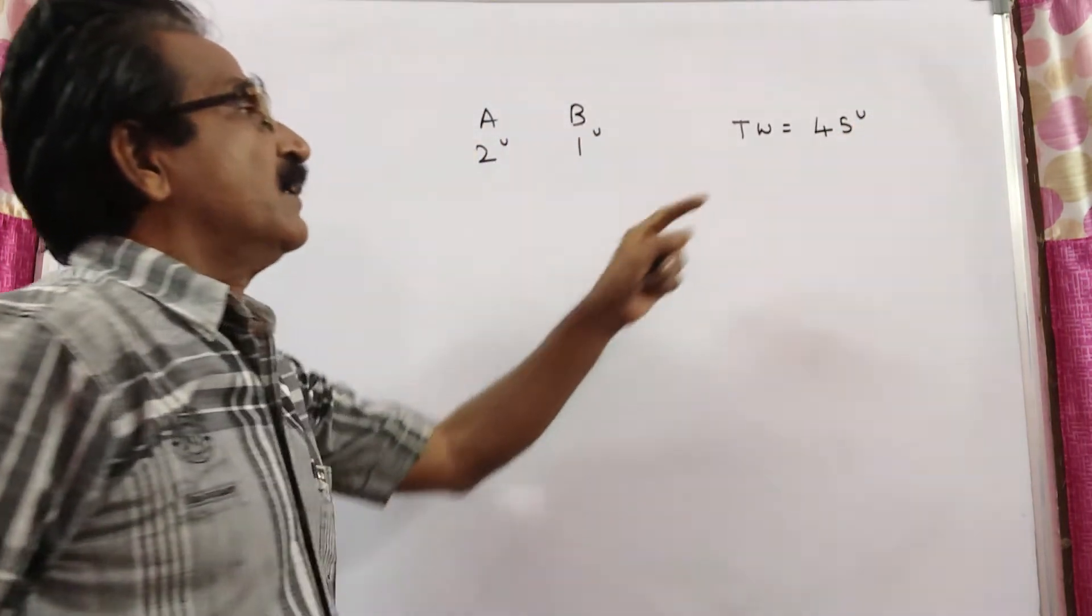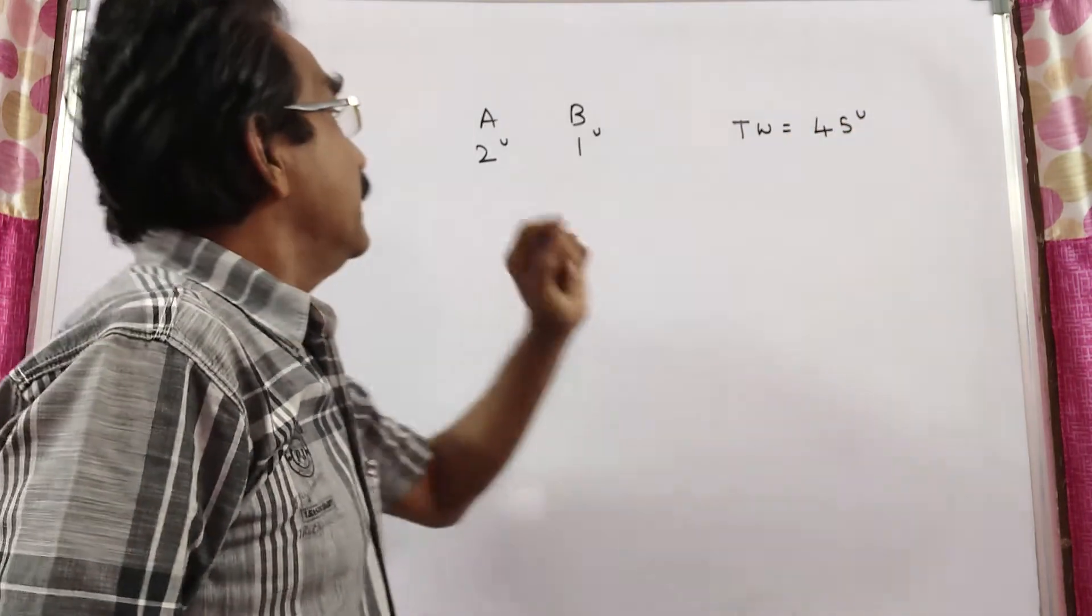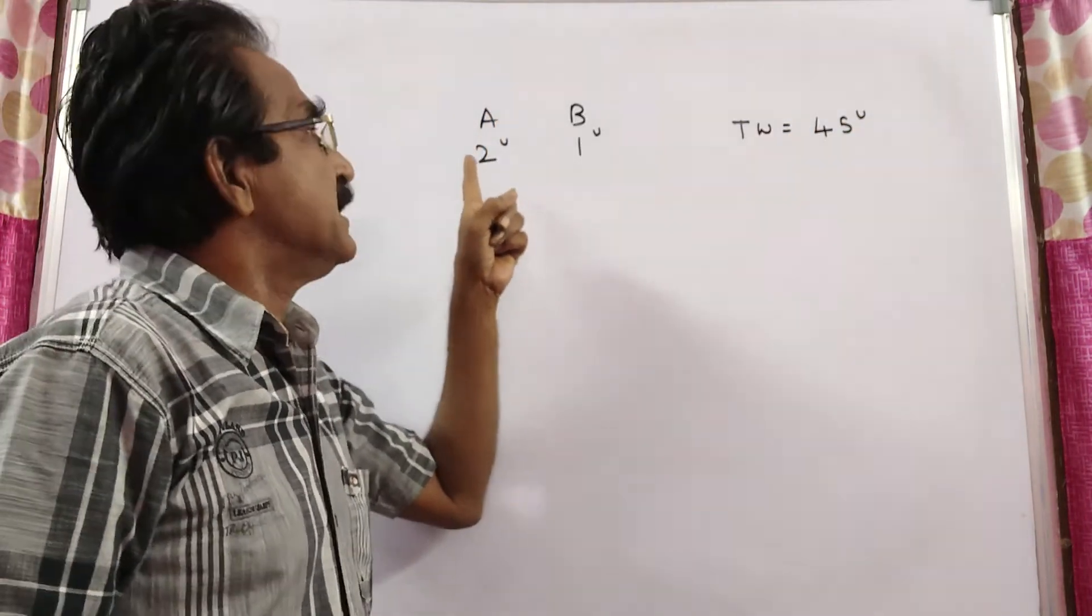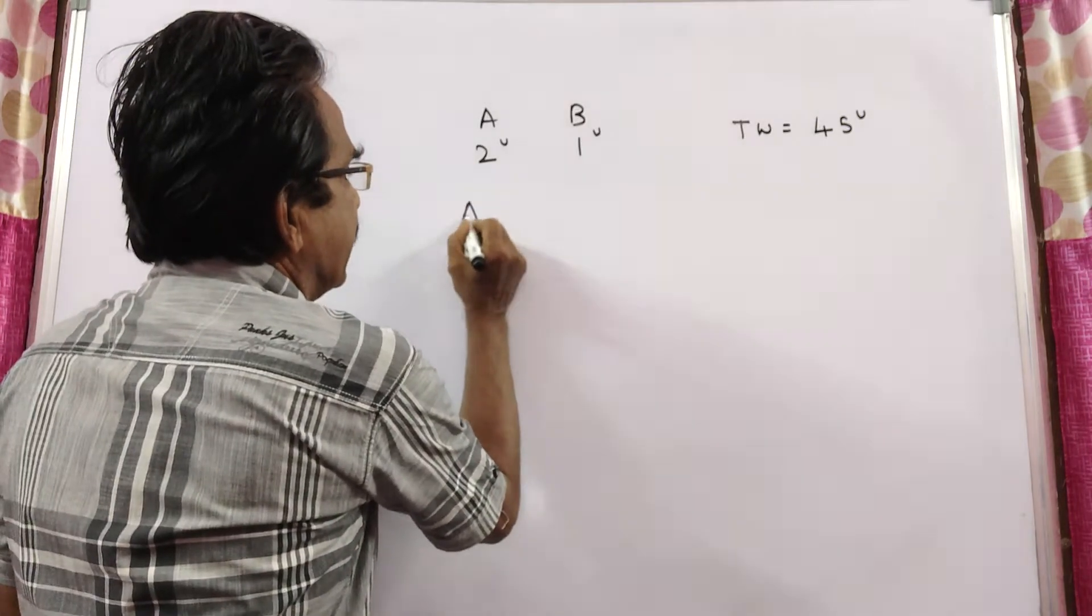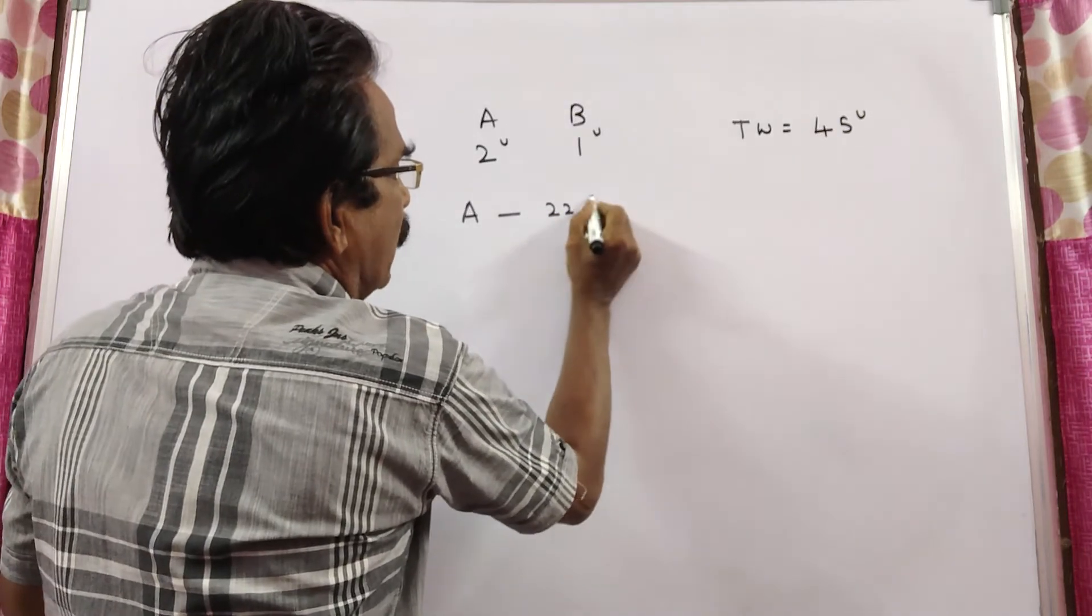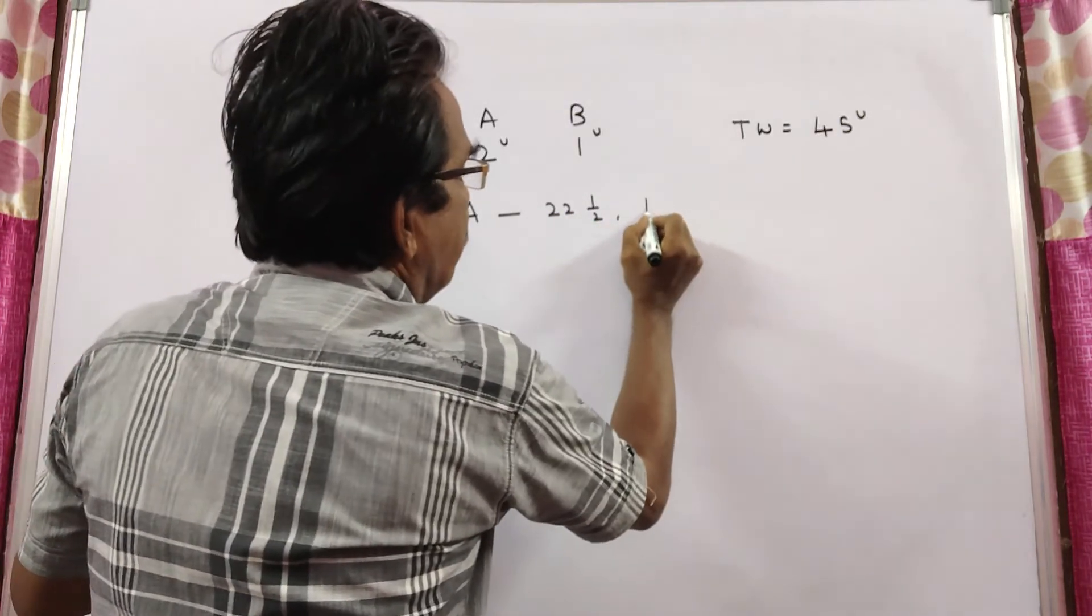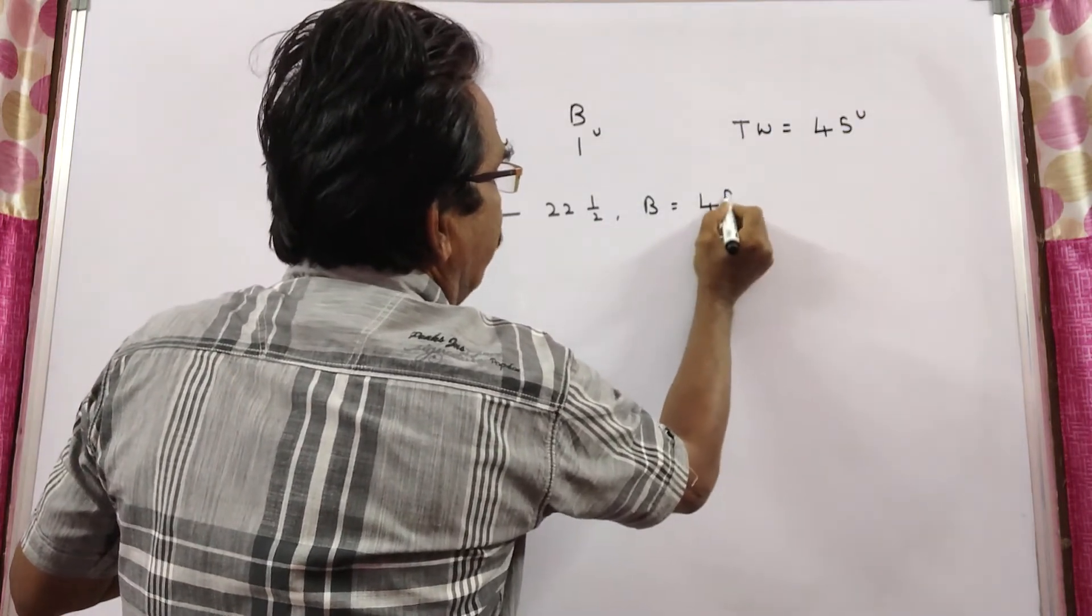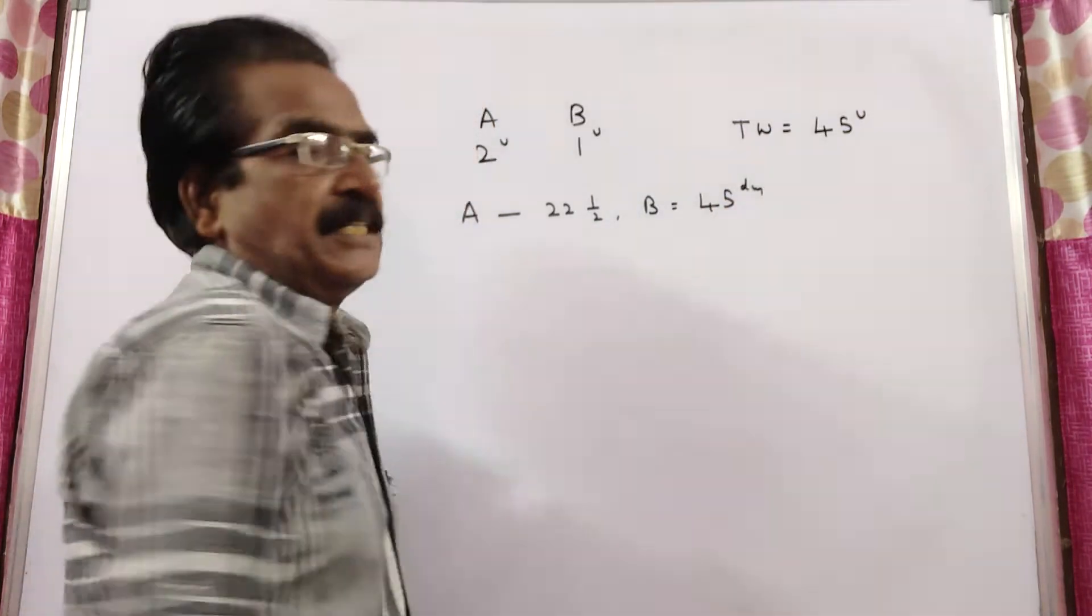So, total work 45 units. That means, A can do 2 units per day. That means, A can complete the work in 45 by 2, 22 and half days. Whereas, B can complete the work 45 by 1, 45 days. So, that is your answer friends.